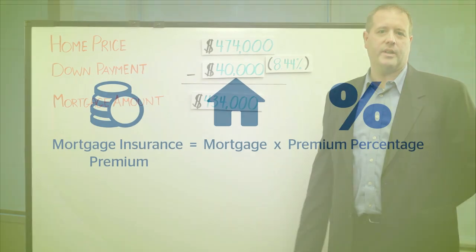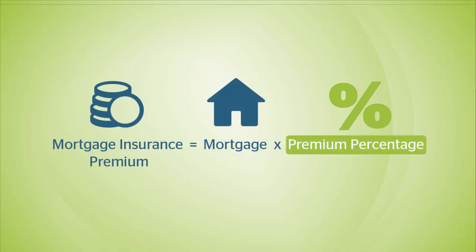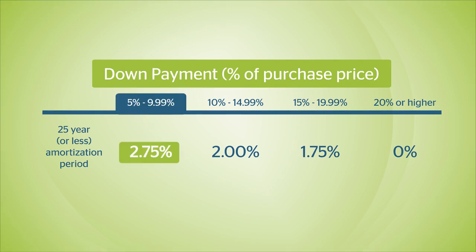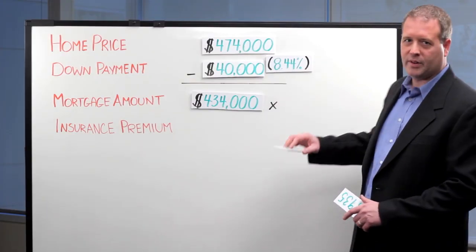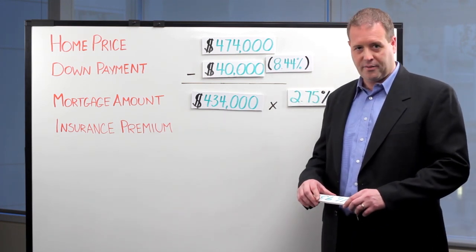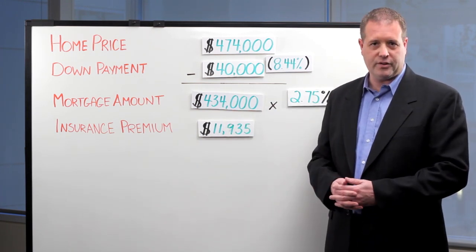Next, we're ready to calculate your mortgage insurance premium. This is your mortgage amount multiplied by your premium percentage. This chart will help you determine what your insurance premium percentage will be based on your down payment amount. With an 8.44% down payment, you're looking at a 2.75% premium. Multiply your mortgage amount by your mortgage premium of 2.75%, and that gives you $11,935 — which is how much your mortgage insurance is going to cost you.